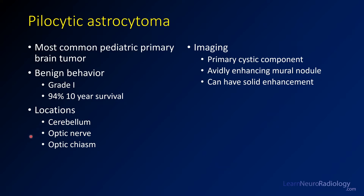They can also occur in the optic nerve and optic chiasm. In adults, you'll sometimes see them supratentorially. They can also be supratentorial in kids, but it's far more common to be in the posterior fossa.